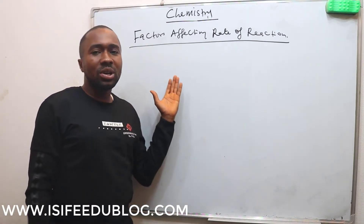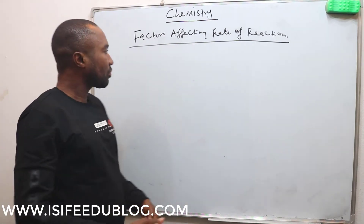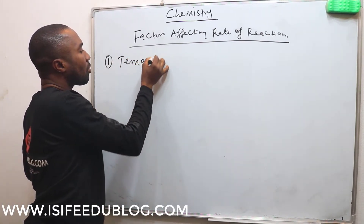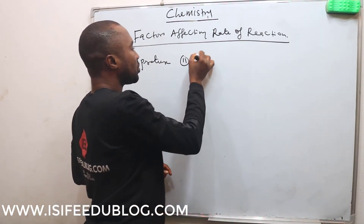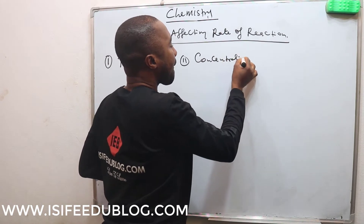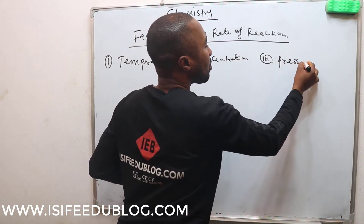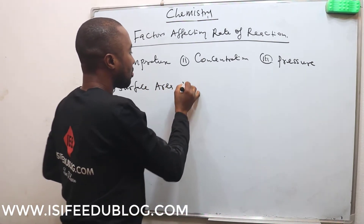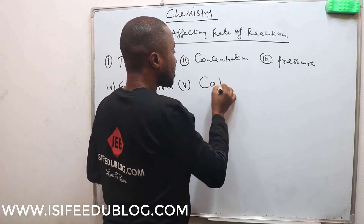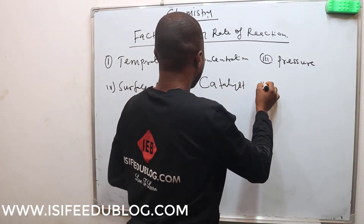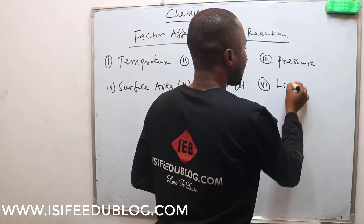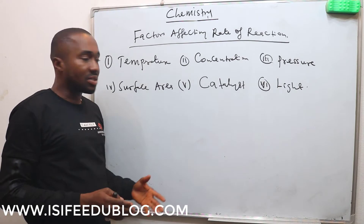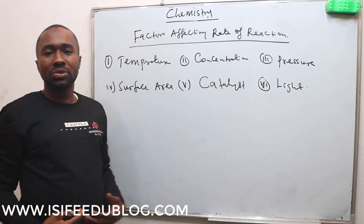Today we'll be looking at the factors affecting the rate of reaction. There are so many factors that can affect the rate of reaction. One of them is temperature. We also have concentration, pressure, surface area, catalysts, and light. So these are the factors that can affect the rate of reaction — the factors that can make a reaction either very fast or very slow.